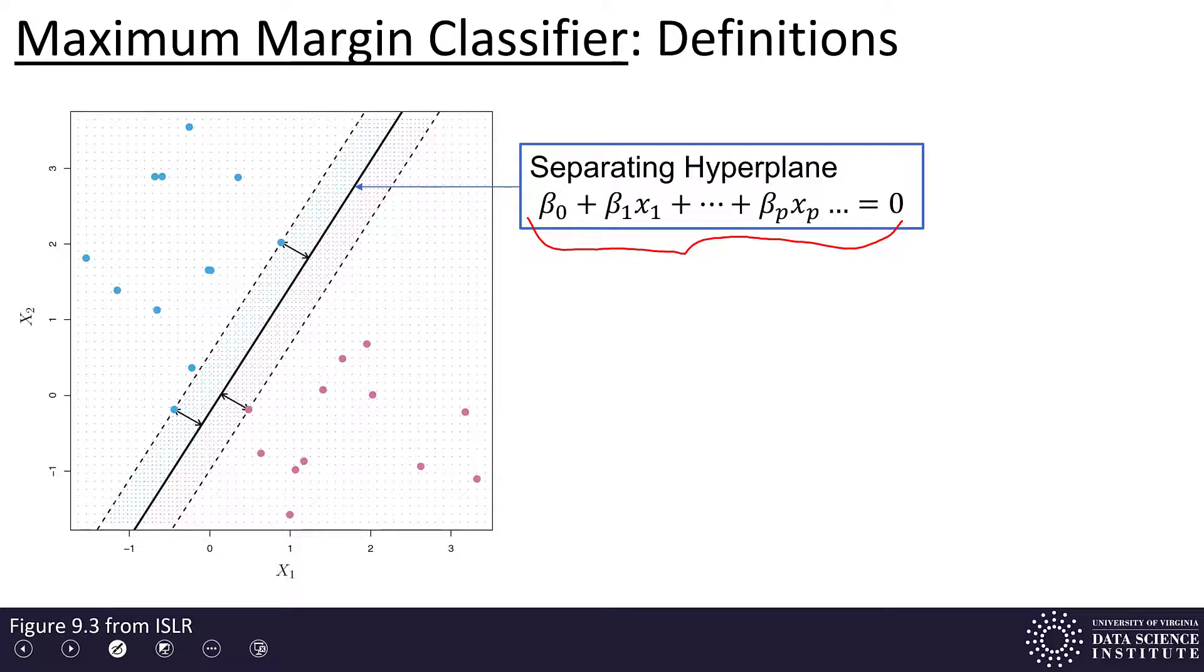We have a linear function of the x's equal to 0. And that linear function of x's is why we sometimes call this a linear separation. And it's what defines in 2D a line or in n dimensions an n-1 dimensional hyperplane, or sometimes we just call it a plane.